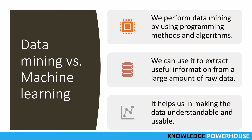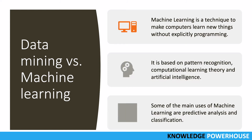Machine learning is a technique to make computers learn new things about their data without explicitly programming. You develop a model — you do some initial programming to build it — but that model helps you learn more about the data automatically. It can keep learning and reporting new observations. Machine learning is based not only on programming but also on pattern recognition, computational learning theory, and artificial intelligence — all working together.